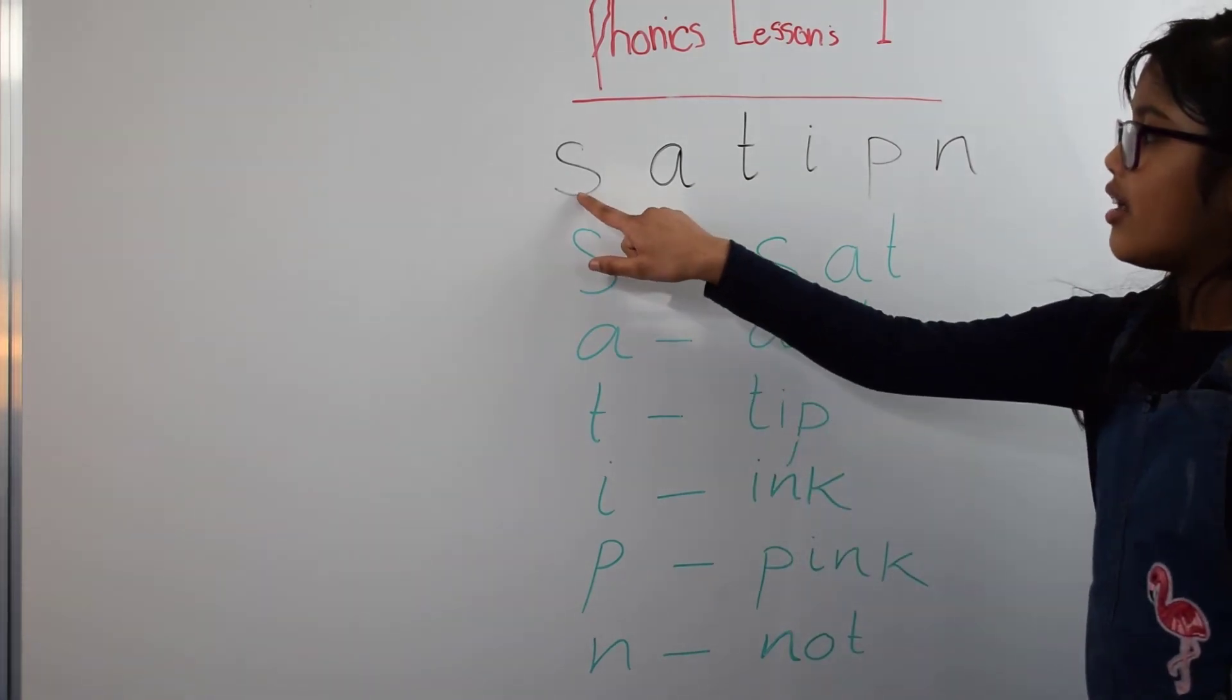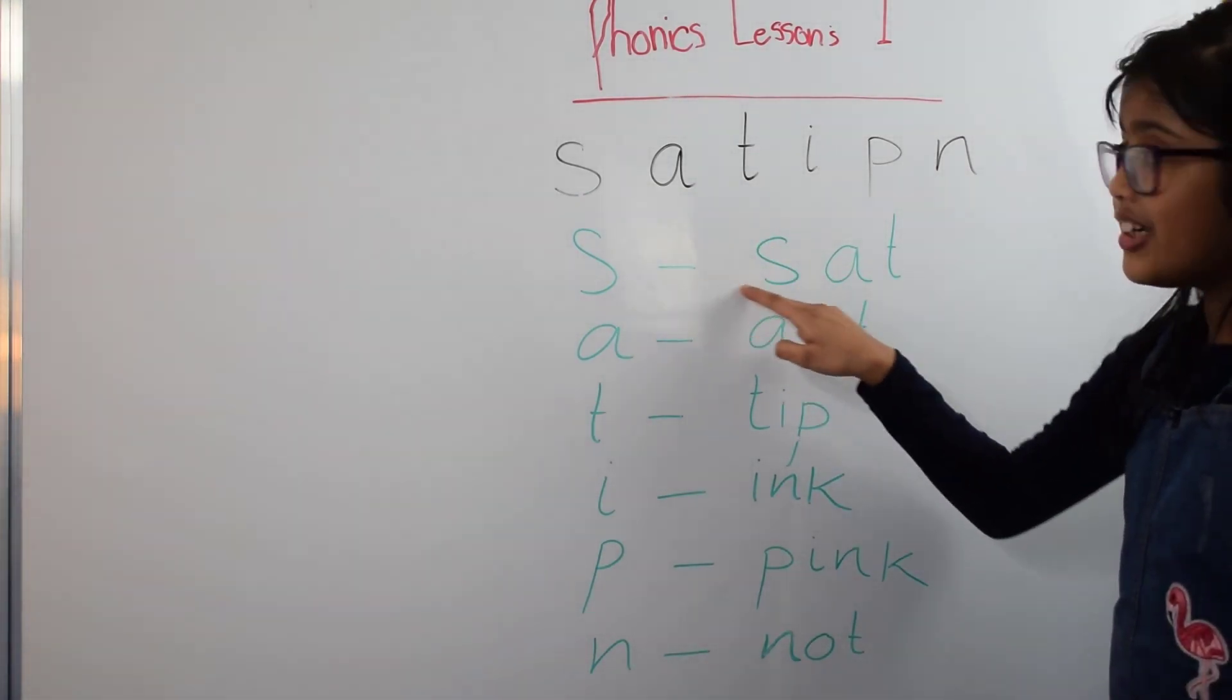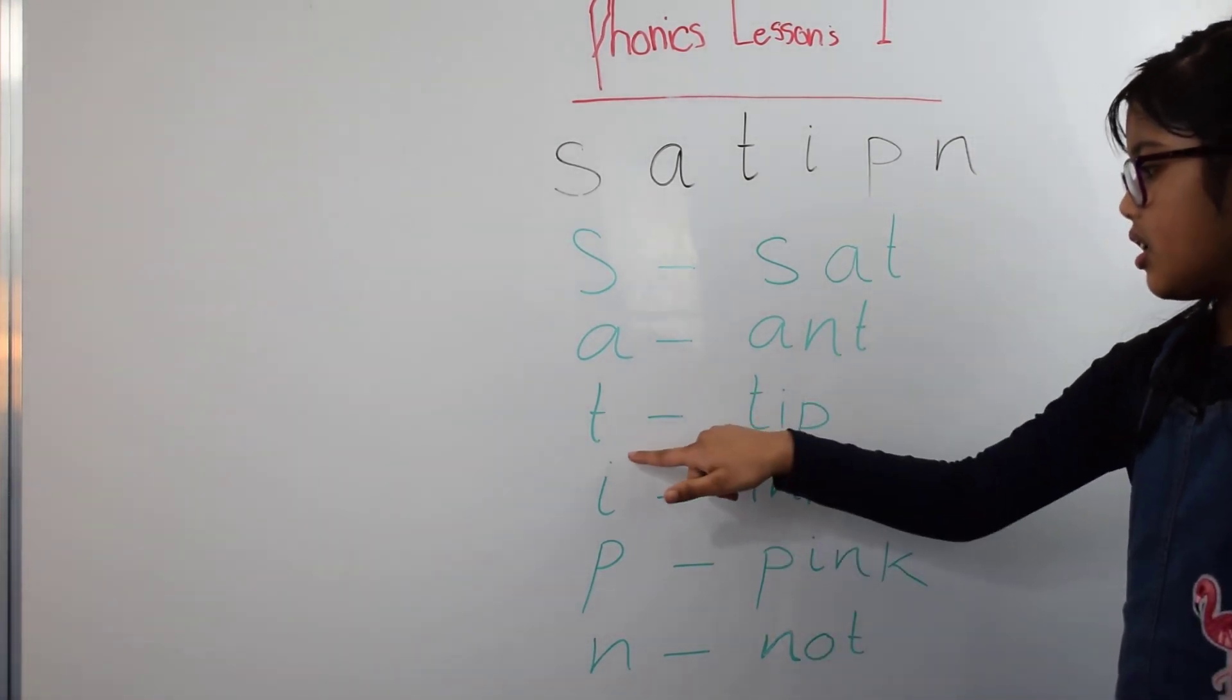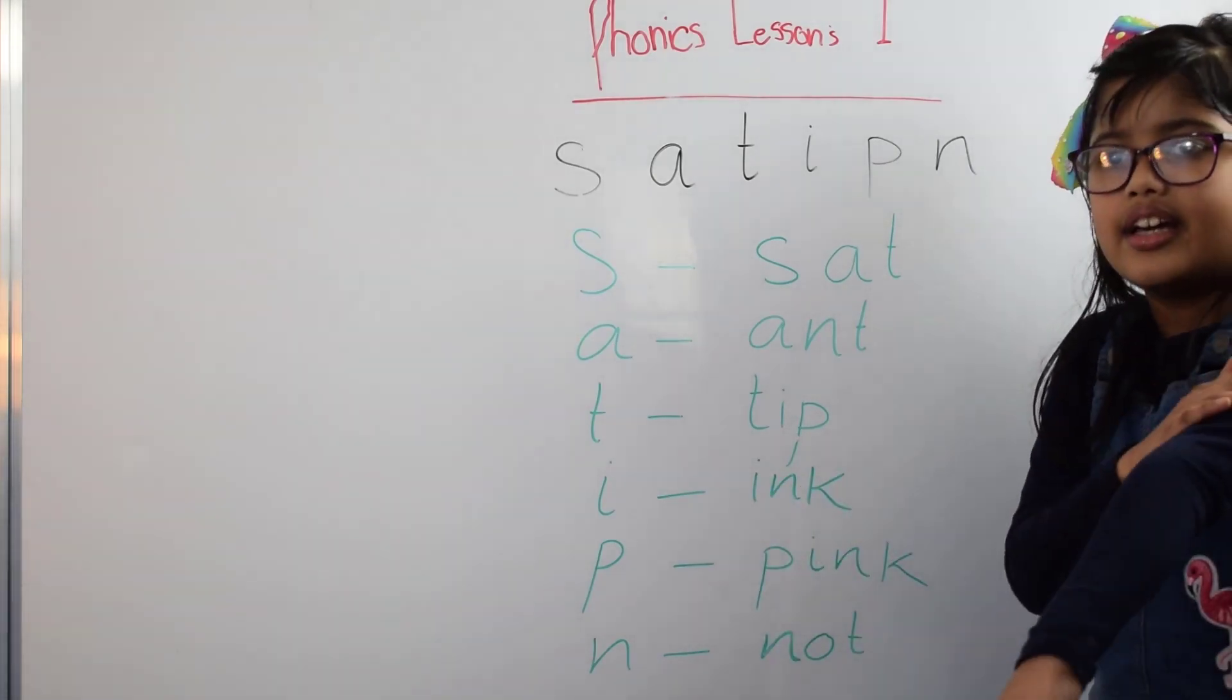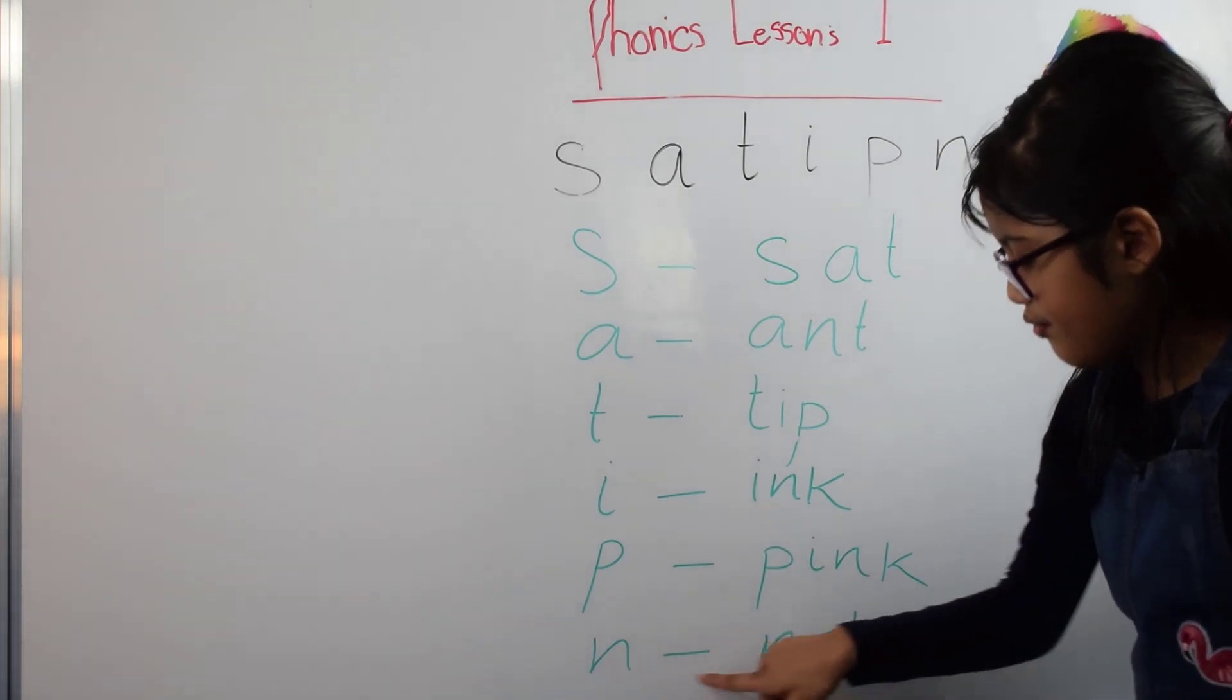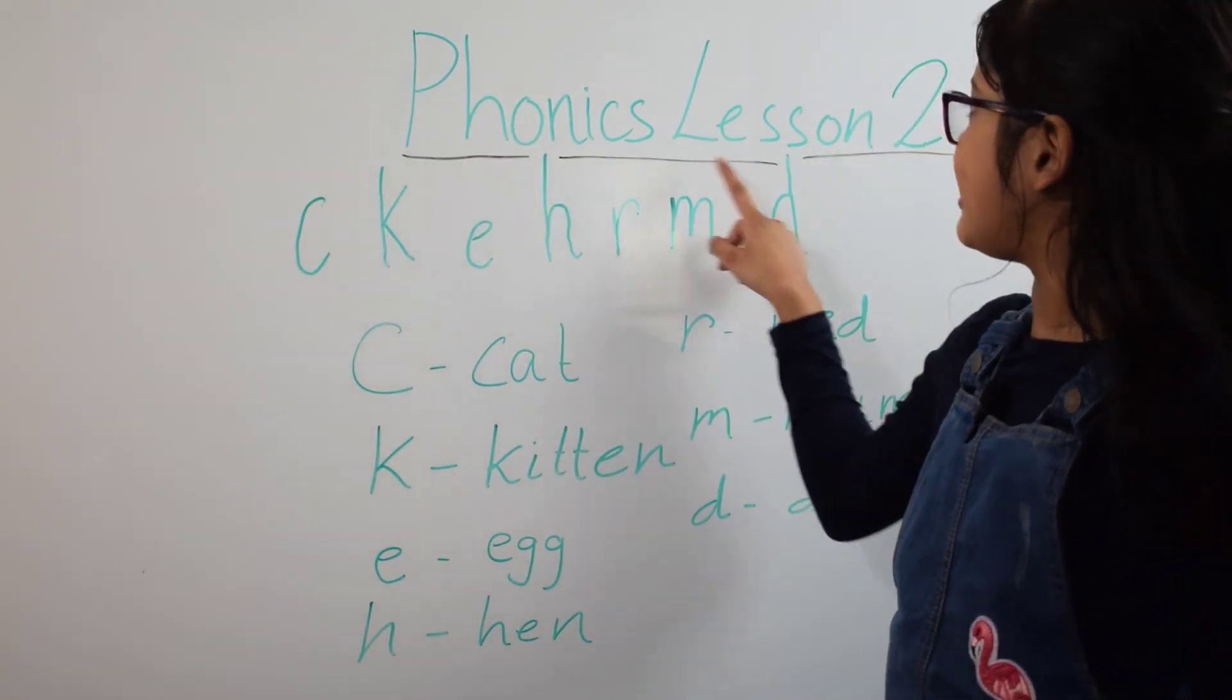Now we're going to go over again to make sure you understand. There are six letters in the lesson we're doing today. S for sat, S-A-T. A for ant, A-N-T ant. T for tip, T-I-P tip. I for ink, I-N-K ink. P for pink, P-I-N-K. N for not, N-O-T.